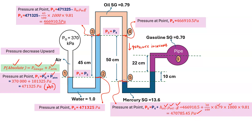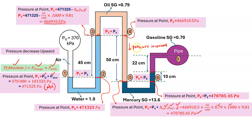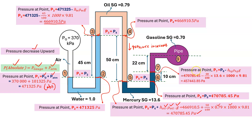We draw another horizontal line to the other limb. Pressure at the same reference line in the same fluid is equal, so P5 = P6 = 470,785.45 Pascal. Now going upward, pressure decreases. P7 = P6 − (10/100)×13.6×1000×9.81 = 457,443.85 Pascal.